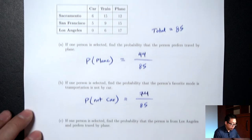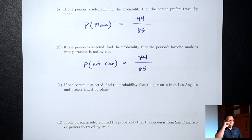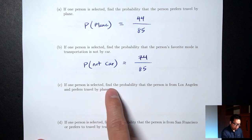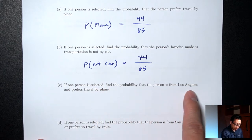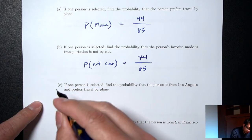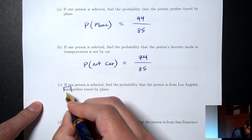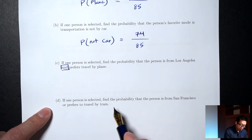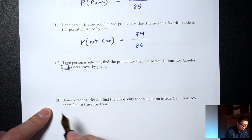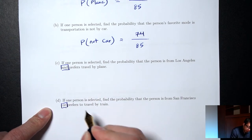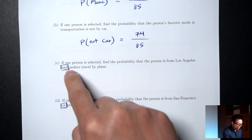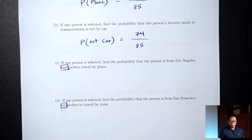The next two parts involve some keywords I want you to pay attention to. Part C says: find the probability that the person is from Los Angeles and prefers travel by plane. Part D says: find the probability that the person is from San Francisco or prefers travel by train. In probability, the word 'and' and the word 'or' mean something very specific, so pay attention to those words if you see them.